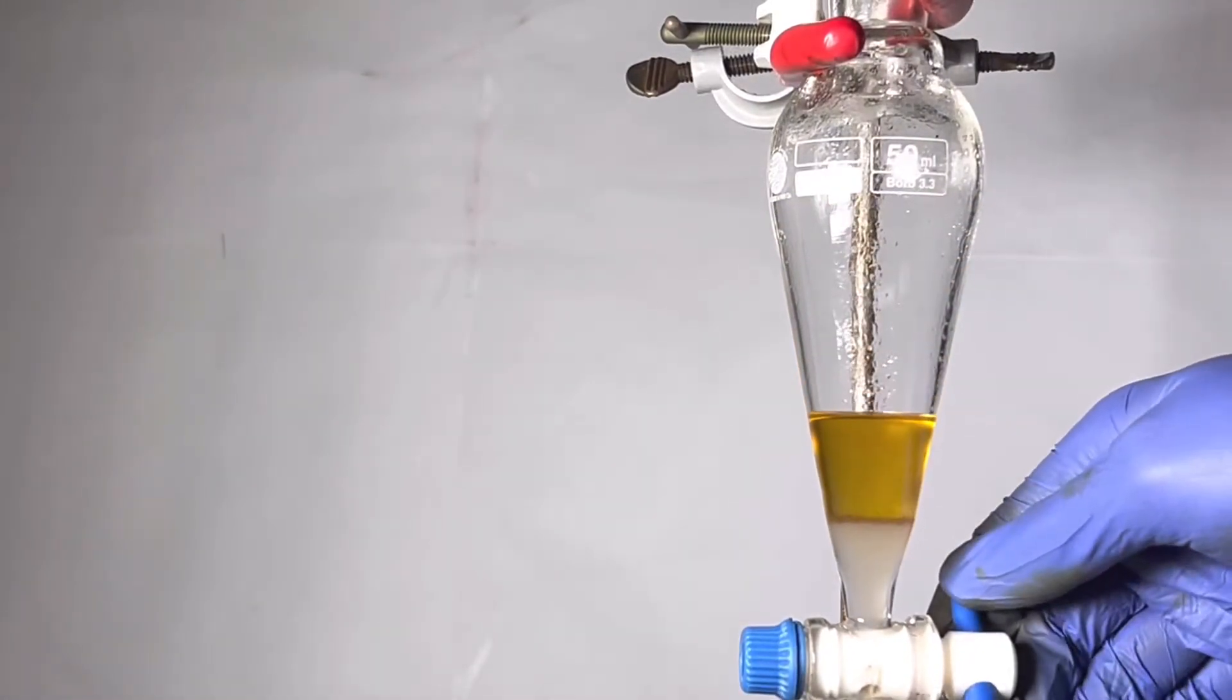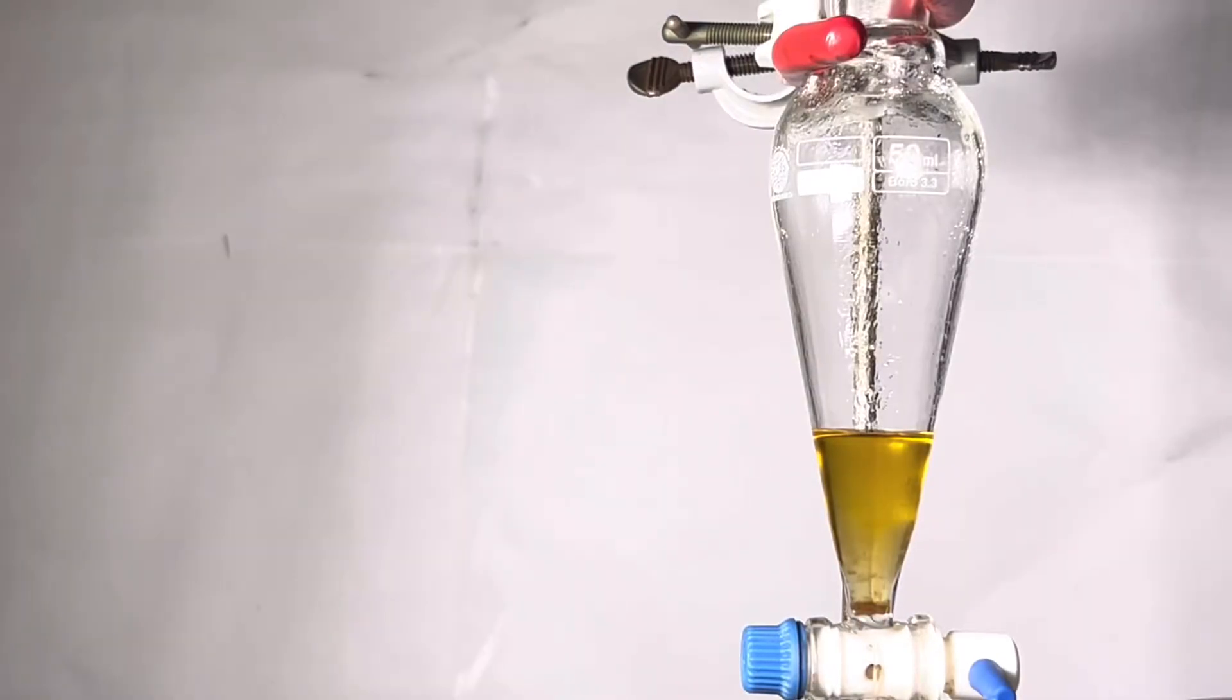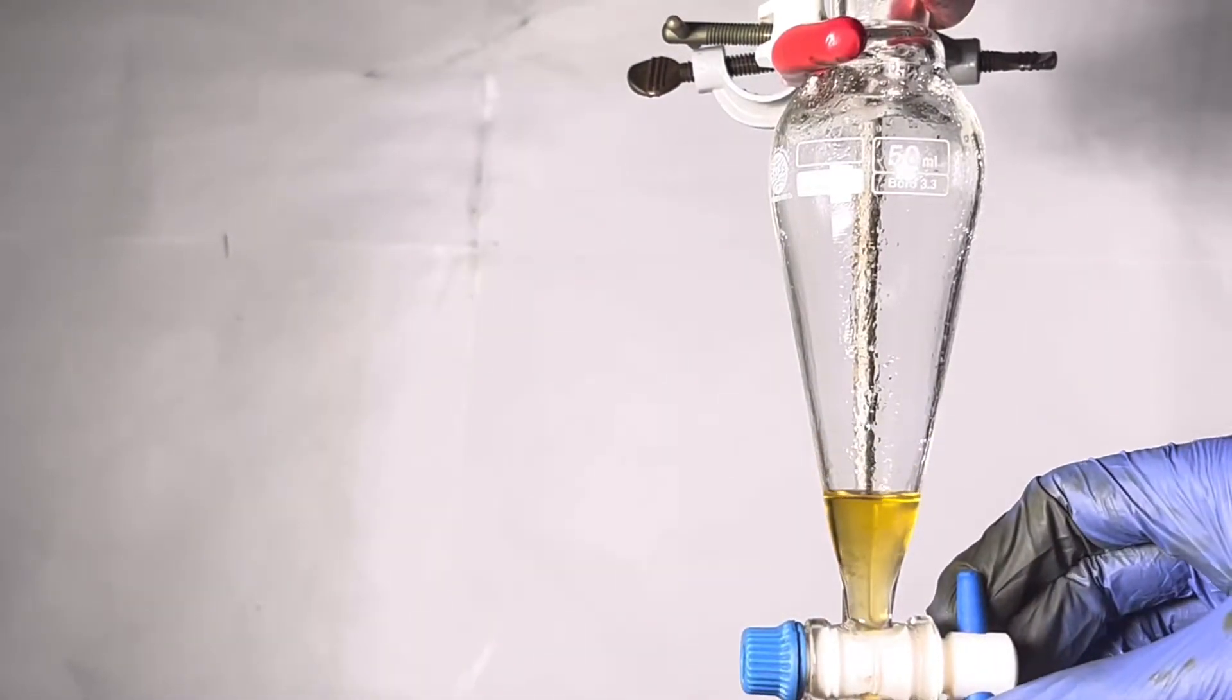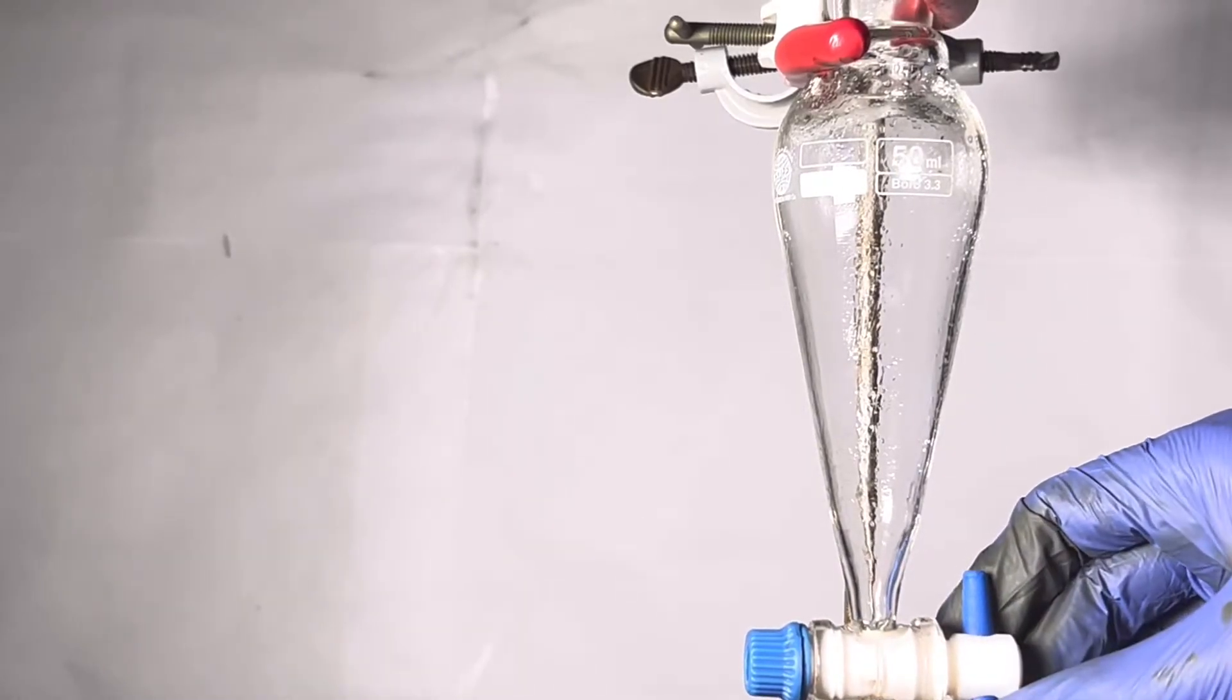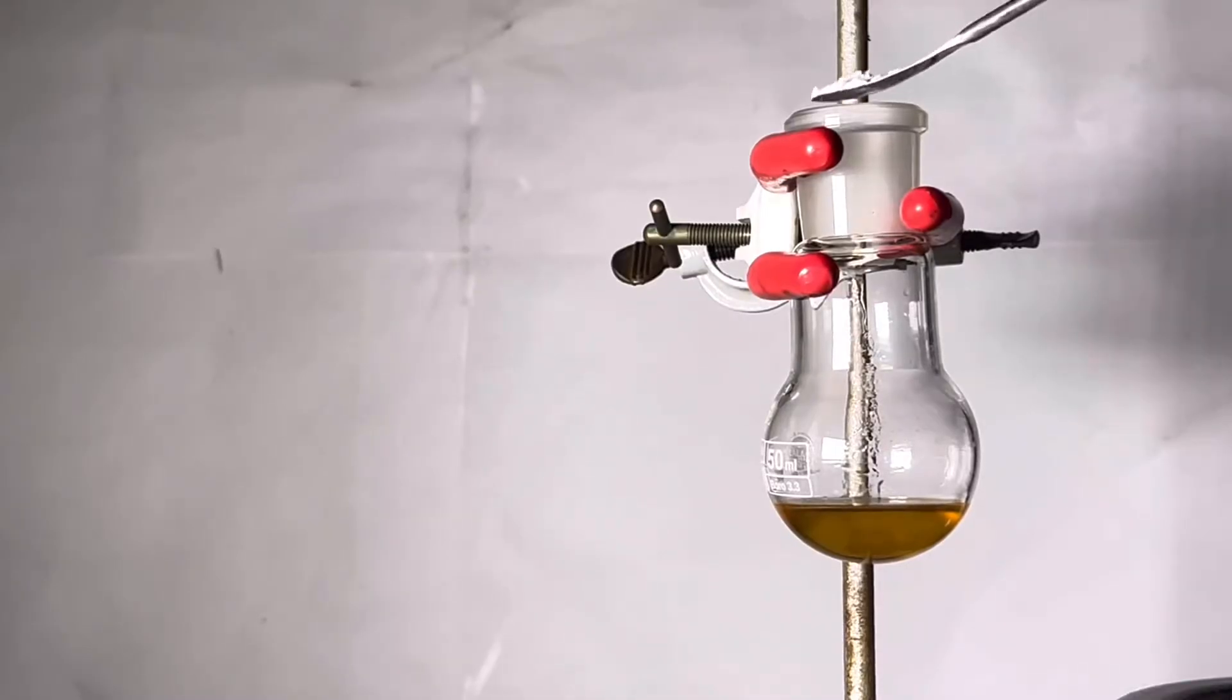Then the upper layer was washed two times with cold water and the valeric acid upper layer was separated from the aqueous layer into a small 50 milliliter round bottom flask. Anhydrous sodium sulfate was used to dry the product.